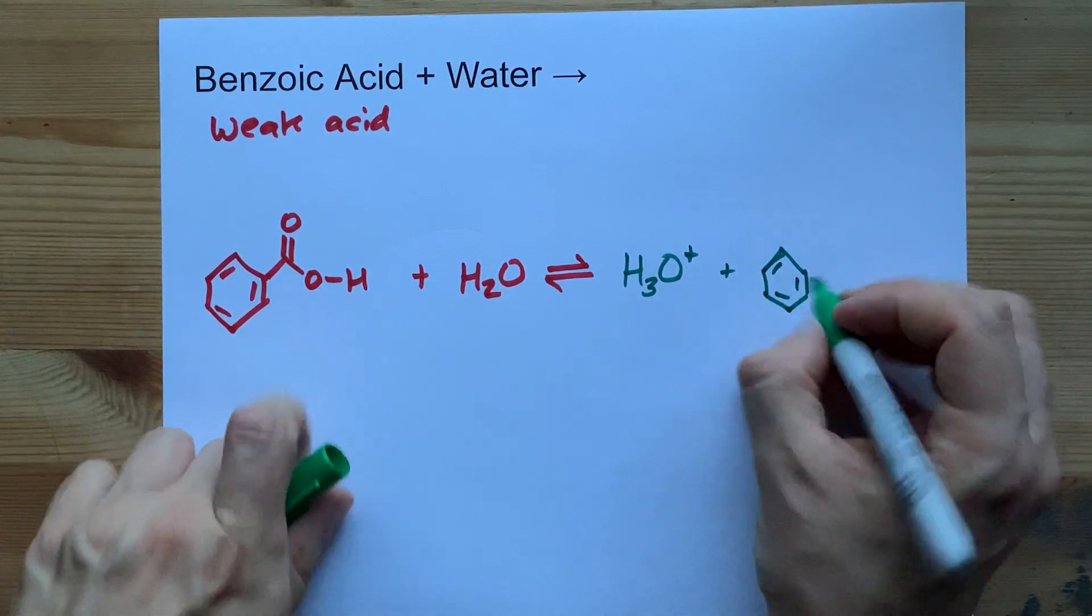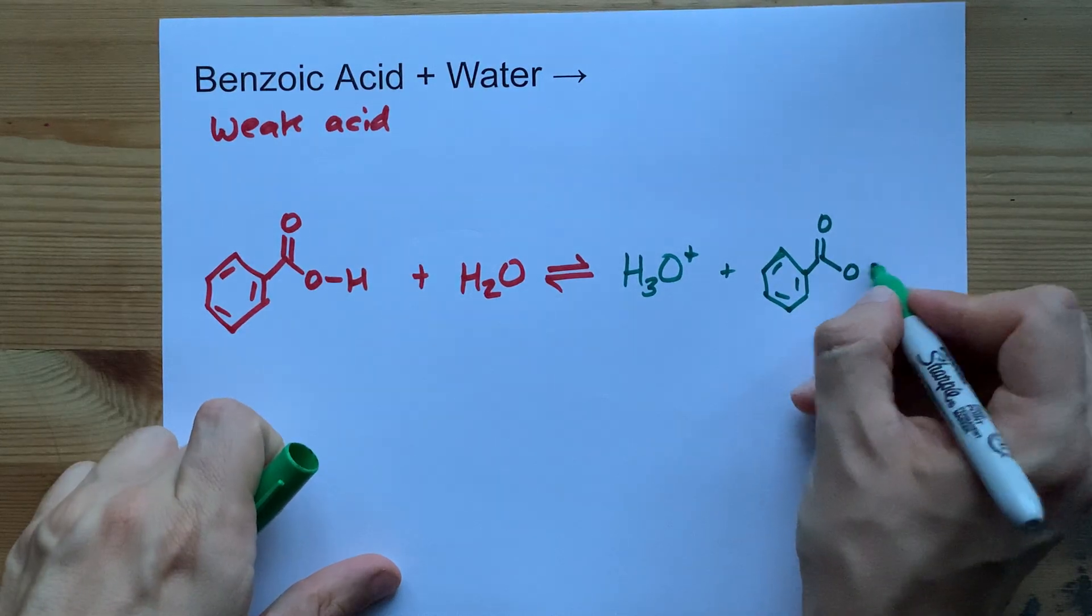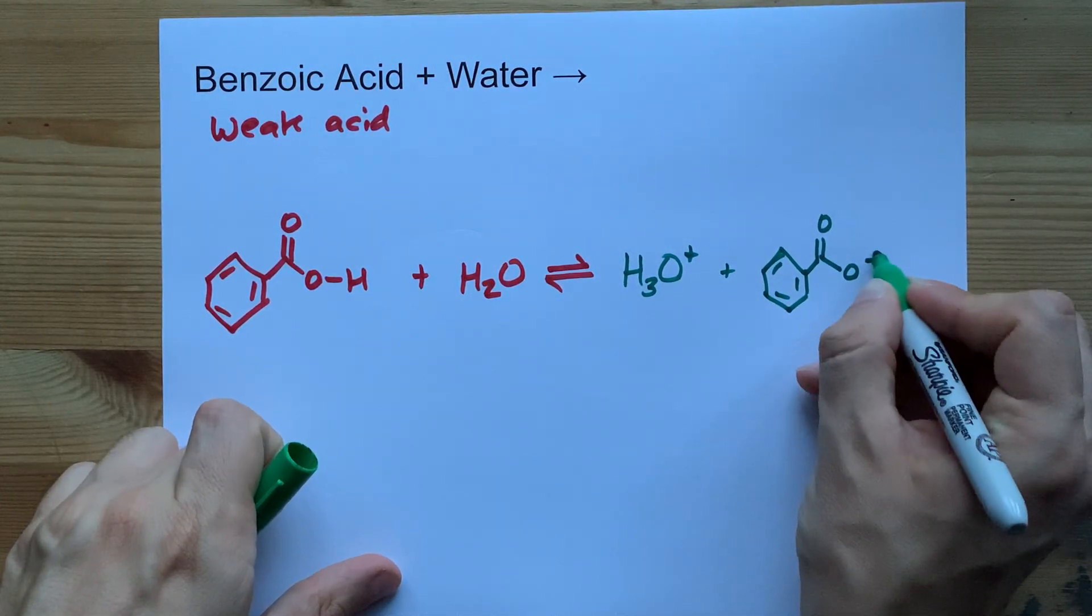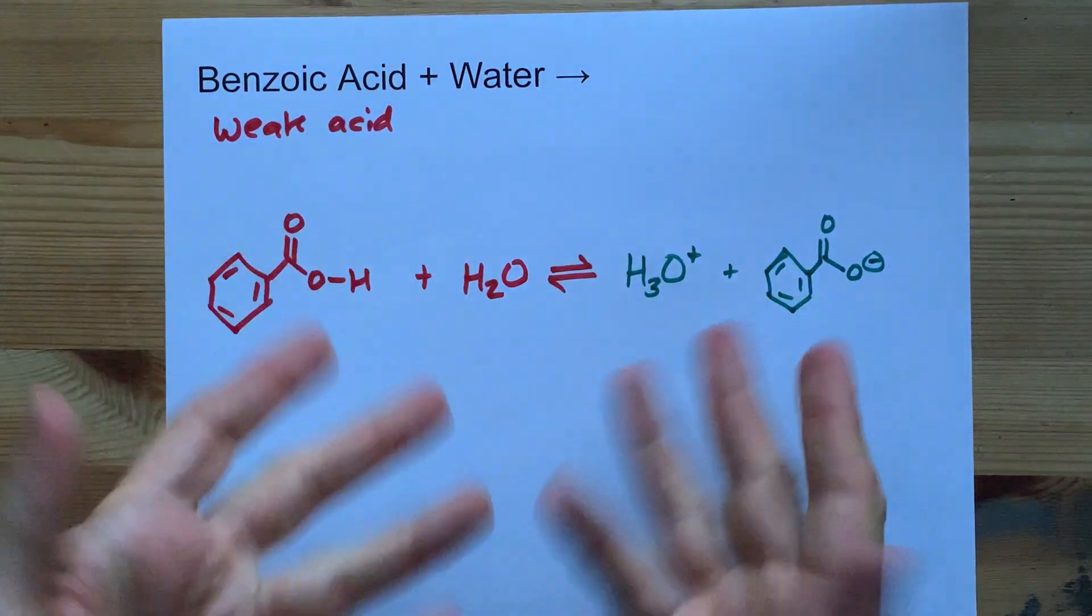That O that the H came off of is going to have a formal charge of minus one. You can draw a minus with a little circle around it there to show it. That's all.